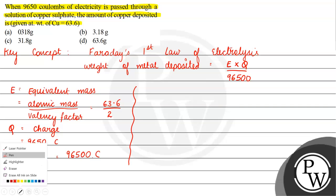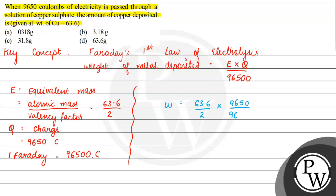Now let us use this. Weight of copper deposited, W equals E, so it is 63.6 divided by 2 into 9650 divided by 96500. If we solve it, then W equals 3.18 grams.